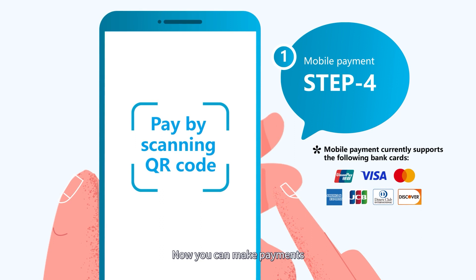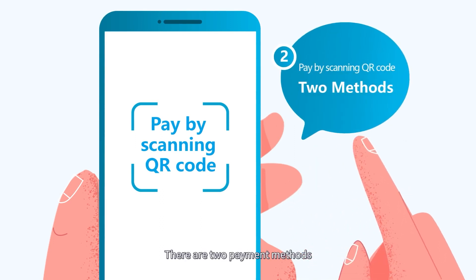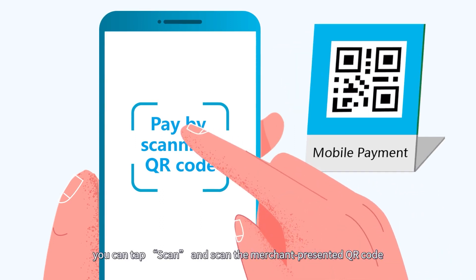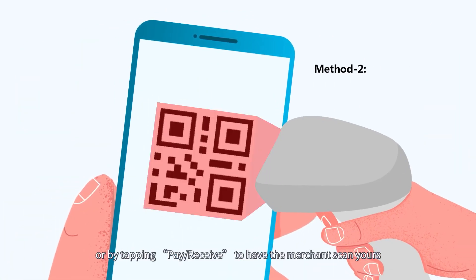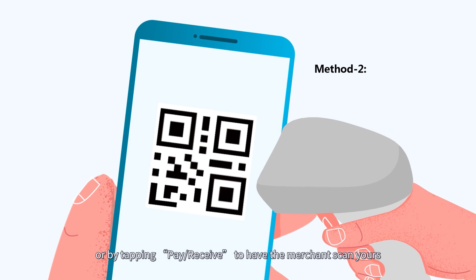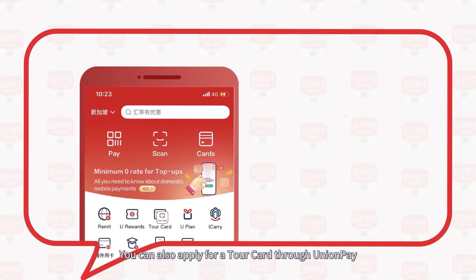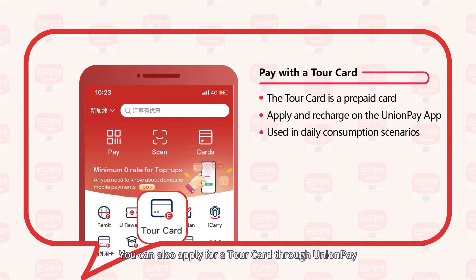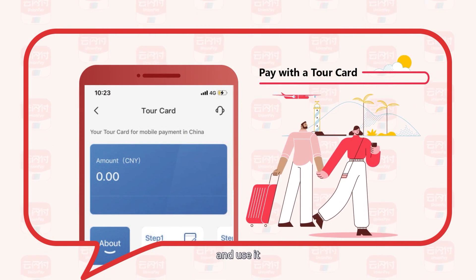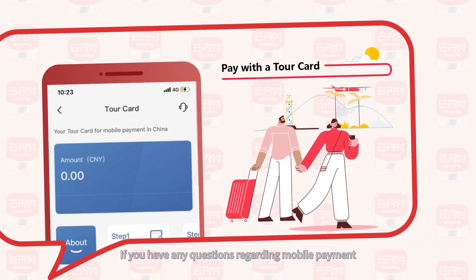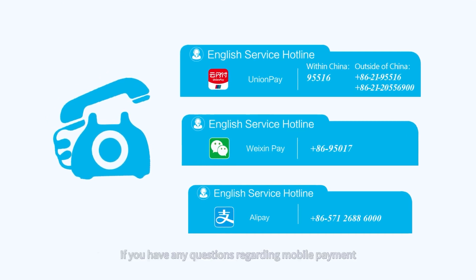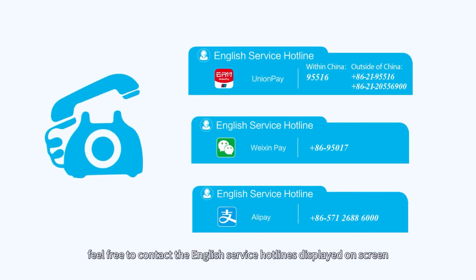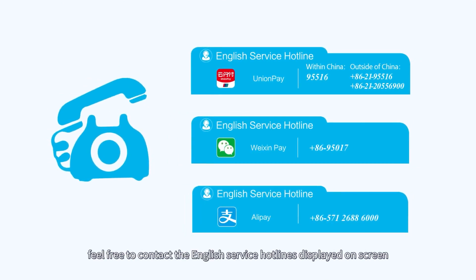Now you can make payments. There are two payment methods: you can tap scan and scan the merchant's presented QR code, or tap pay and have the merchant scan yours. You can also apply for a tour card through UnionPay and use it after topping it up. If you have any questions regarding mobile payment, feel free to contact the English service hotlines displayed on screen.